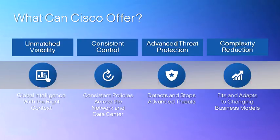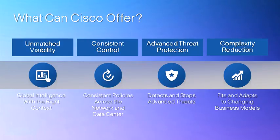There are four key factors no other security company in the world can offer. They include unmatched visibility, the intelligence with the right context in your network applications, users, and devices. Consistent control, bringing your customers consistent policies across the entire network all the way from the edge to the data center. Advanced threat protection, the ability to shrink the large attack surface as well as detecting and containing threats. And lastly, reduced complexity — the ability to adapt, scale, and meet all of the challenges.